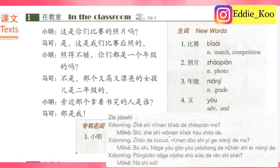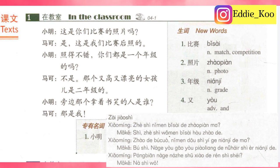又高又漂亮的 — tall and beautiful. 的 here is an indicator for an adjective in context. 女孩 means a girl. For someone from southern China, I would omit the 儿 and just say 女孩. Or you can say 女生, which is very colloquial in spoken Chinese and also means a young lady or a girl — 女生 equals 女孩. 是二年级的 means is from grade two. 二年级 means grade two.